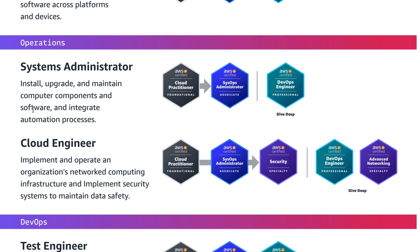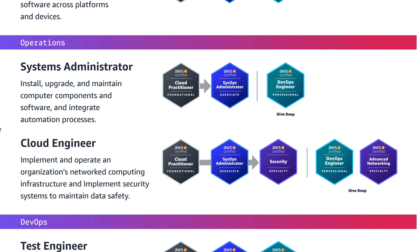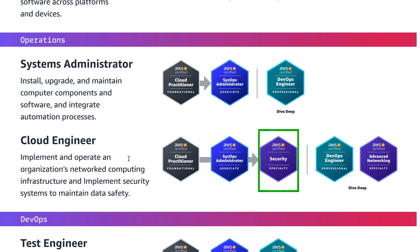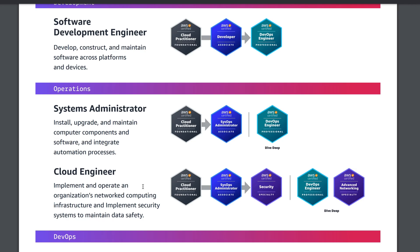Another popular path is Cloud Engineer. The roles and responsibilities are to implement and operate an organization's networked computing infrastructure and implement security systems to maintain data safety. The Cloud Engineer path requires Cloud Practitioner foundational certification, then SysOps Administrator Associate, then Security Specialty, and for a deep dive you also need DevOps Engineer Professional and Advanced Networking Specialty. It's not an easy path — you have to get a lot of certifications — but it's a really good journey.